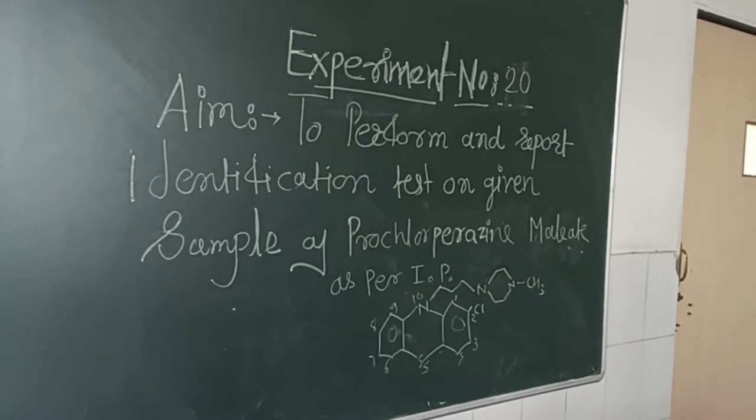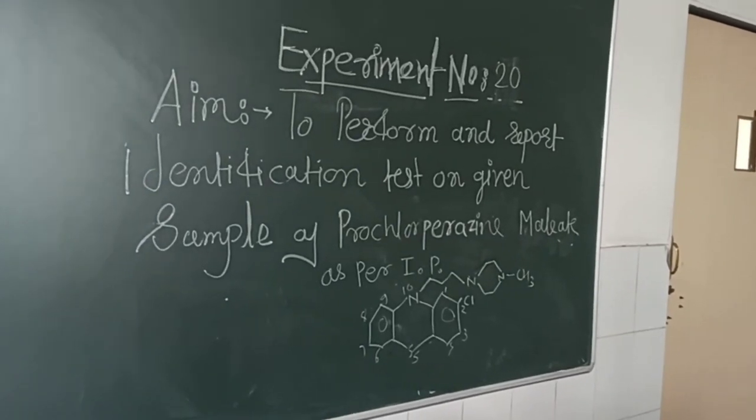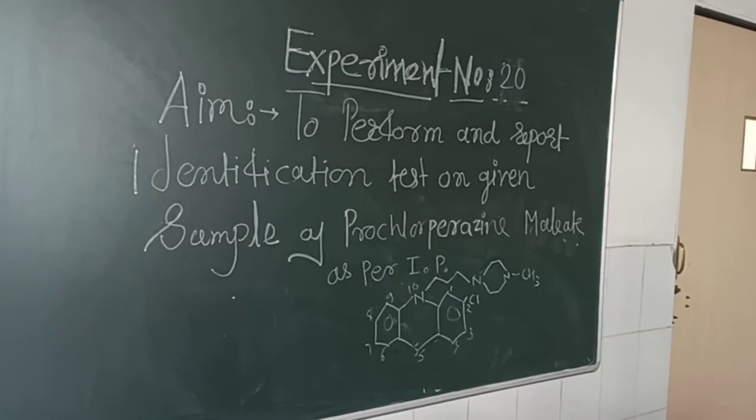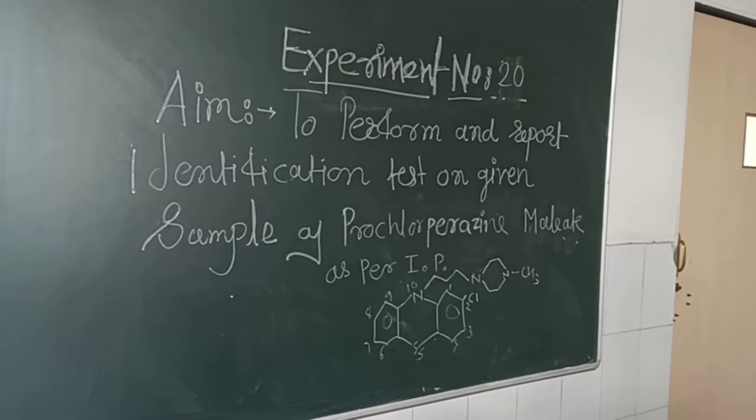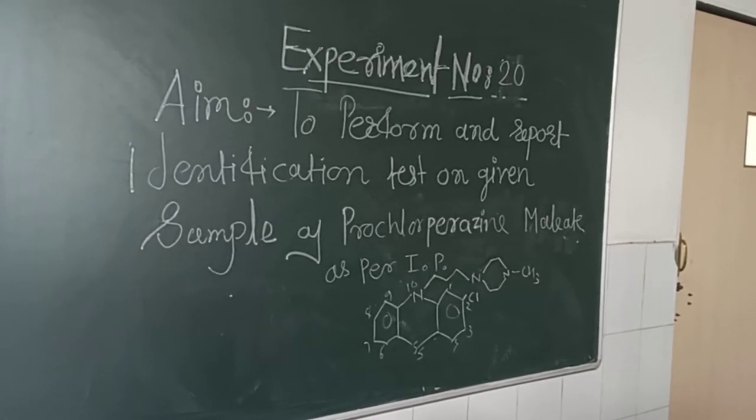Good afternoon. Today we are going to perform the next experiment of pharmaceutical chemistry 2, that is experiment number 20. The aim of the experiment is to perform and report identification tests on the given sample of prochlorperazine maleate.